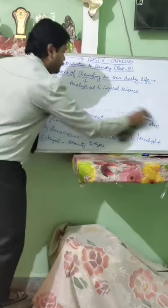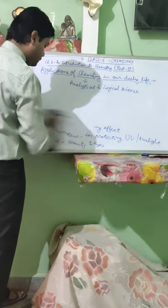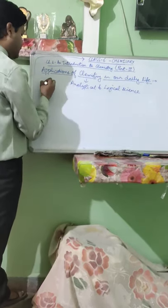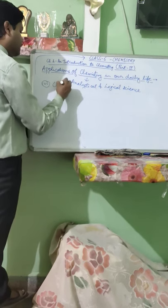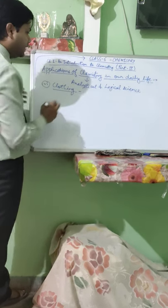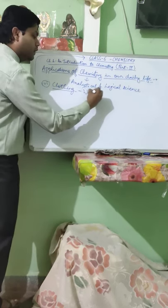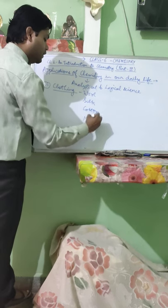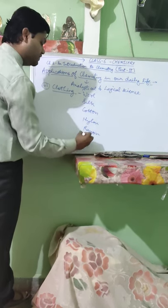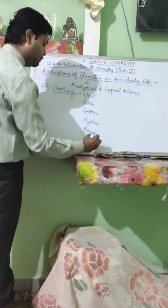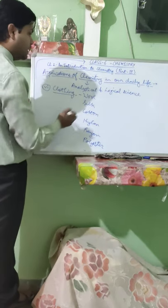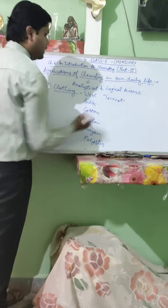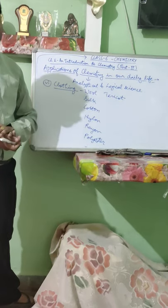The sixth application of chemistry is in clothing. The clothes which we wear are also a part of chemistry. Wool, silk, cotton, nylon, rayon, polyester, as well as terricot and many other important fibres — these are all a part of chemistry.